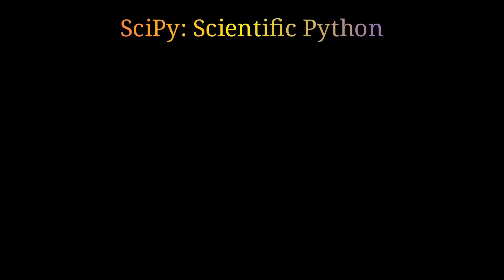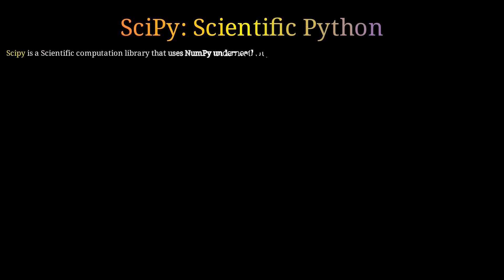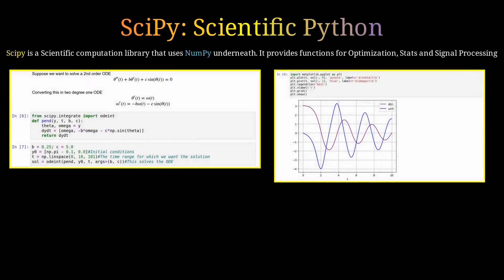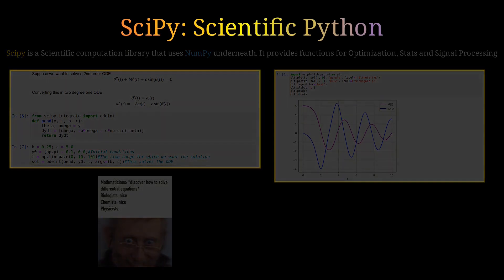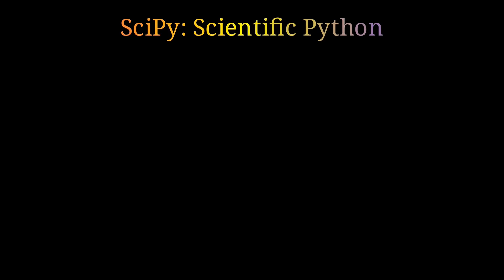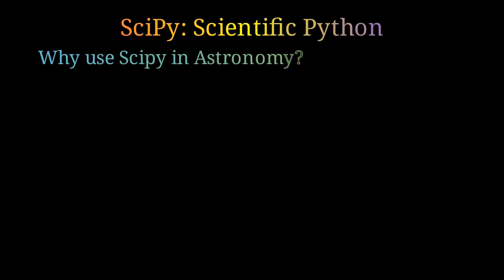Now let's talk about SciPy, or Scientific Python. It is another Python package that builds on NumPy and has many features like optimization and signal processing. Most importantly, you can solve differential equations using it. The question is: where do we use SciPy in astronomy?